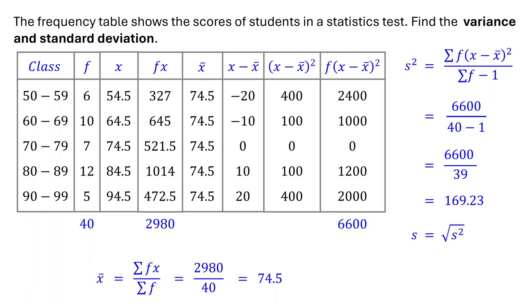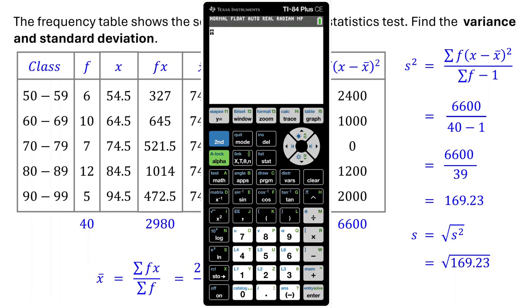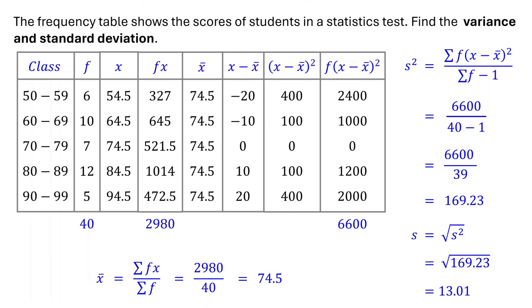Now, to find the sample standard deviation, just take the square root of the sample variance. The square root of 169.23 is about 13.01 when rounded to the nearest hundredth. So the standard deviation is 13.01.